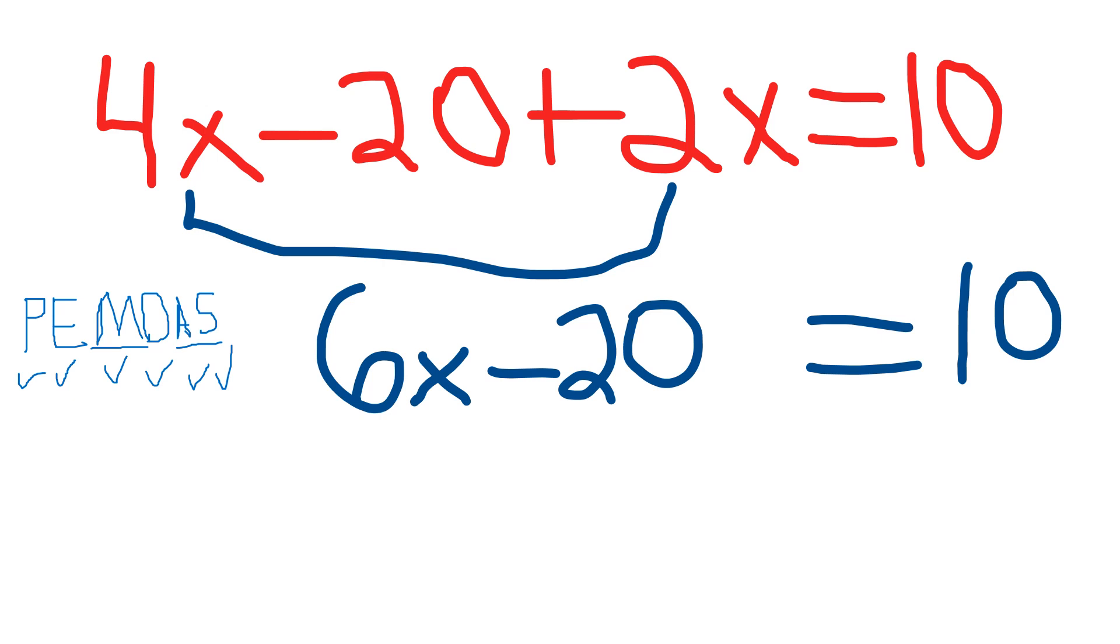You're going to do parentheses, exponents, which in this equation here you don't have. But you do have multiplication and division, so you're going to do those first. Multiplication and you don't see division, but you have it. And you have addition and subtraction. So just try to keep them together. MD like a medical doctor, and AS like an associate's degree. So try to think of it that way.